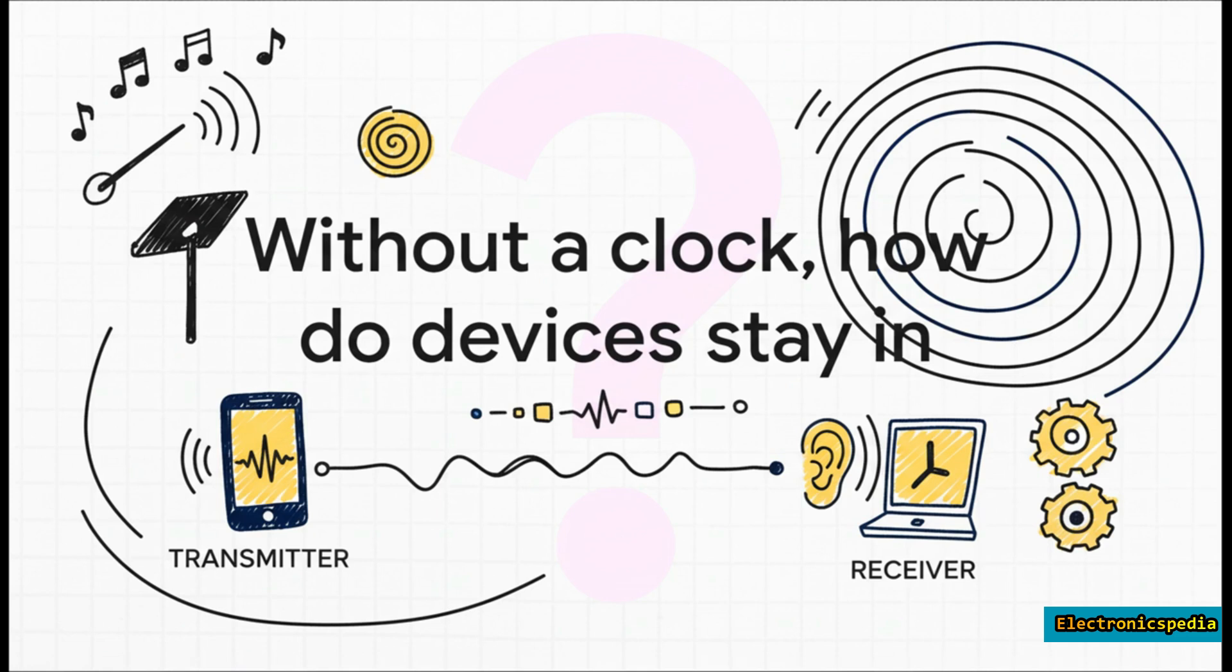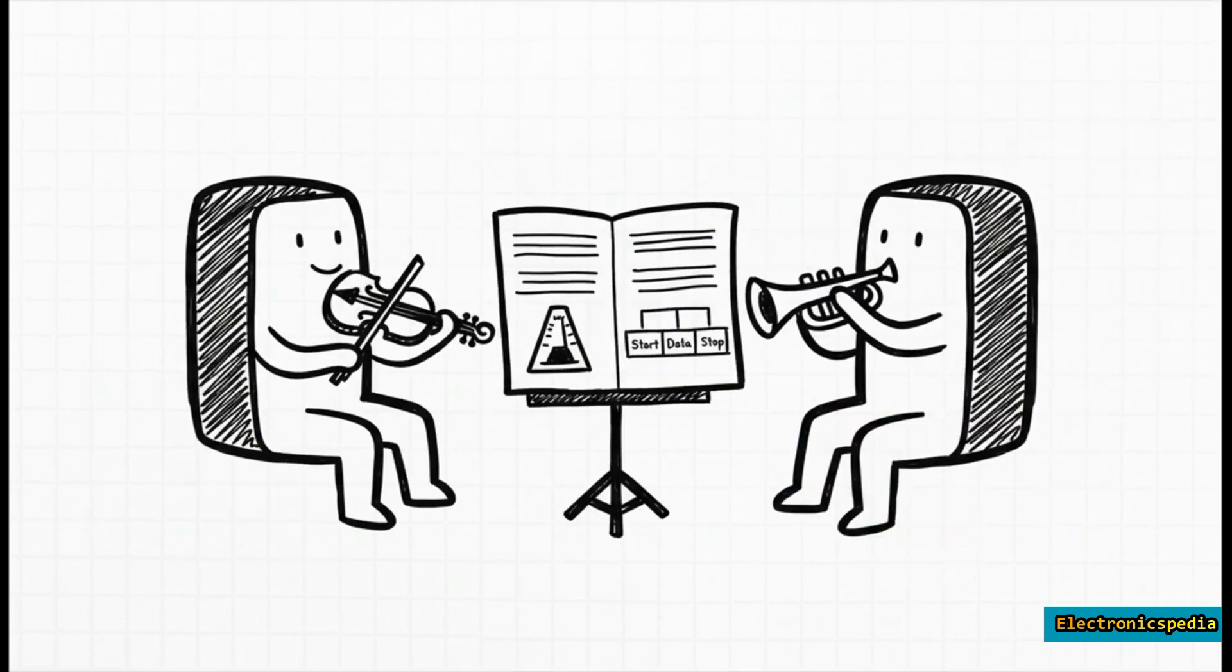How does the receiving device know exactly when to listen for each bit if there's no shared beat to follow? Well, the answer is actually pretty simple and kind of genius: they agree on the rules before the conversation even starts.